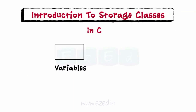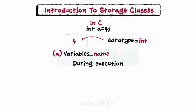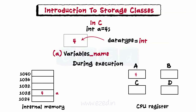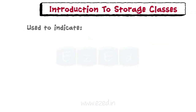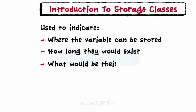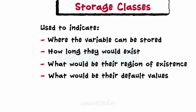Variables in C are declared by the type of data they can hold. The name of the variable is associated with the memory location which stores the value of the variable. During the execution of the program, these variables can be stored in the internal memory or in a CPU's register. To indicate where the variable can be stored, how long they would exist, what would be their region of existence, and what would be their default values, C has the concept of storage classes.